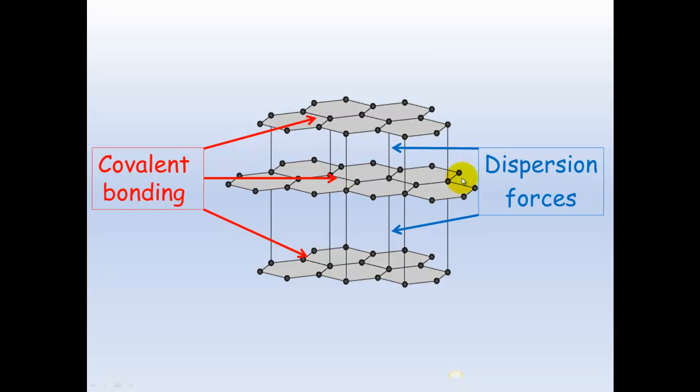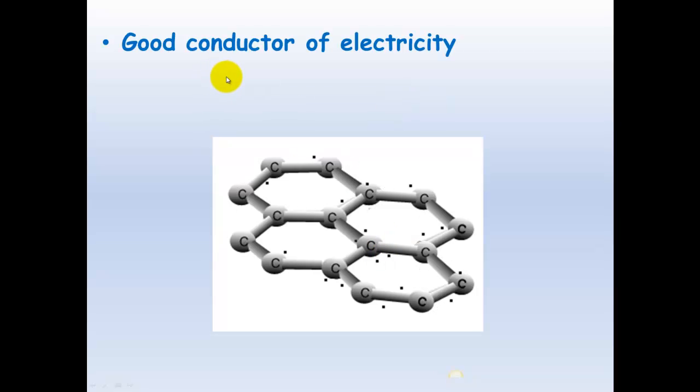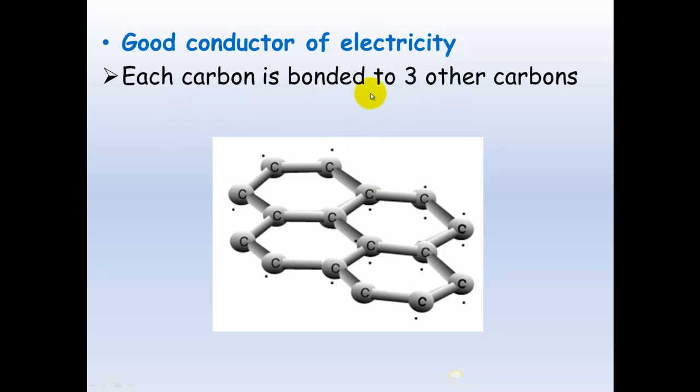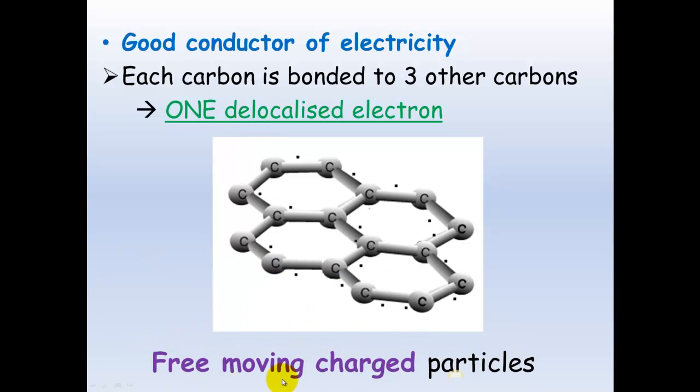They are good conductors of electricity. And the reason for that is because each carbon is bonded to only three other carbons. And this means that there's a delocalized electron which can run around these rings. So there's one delocalized electron, which means that there is free-moving charge. And if there's free-moving charge particles, it can conduct electricity.